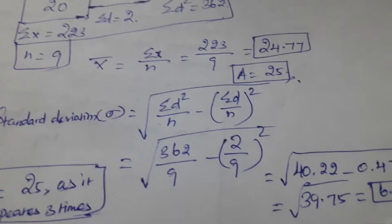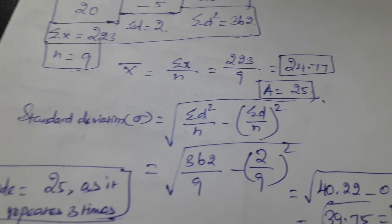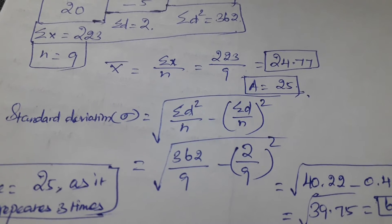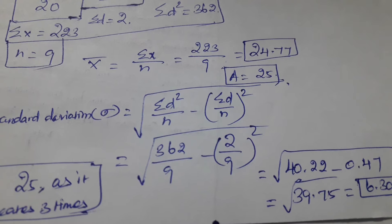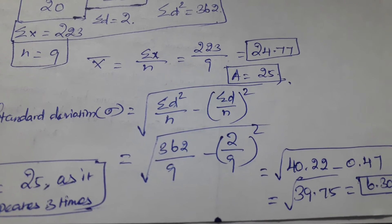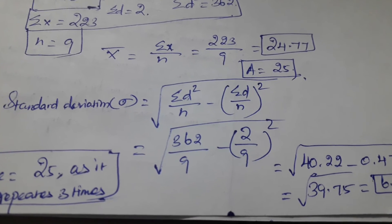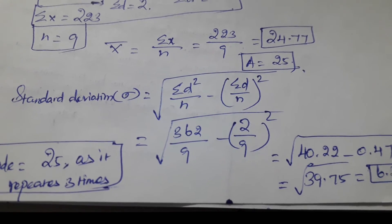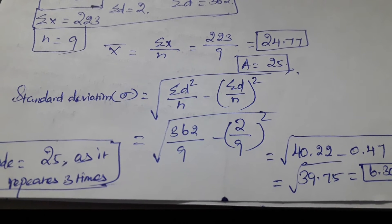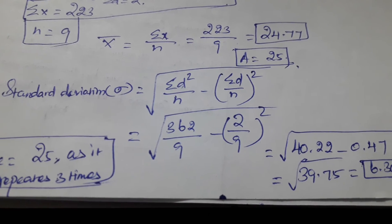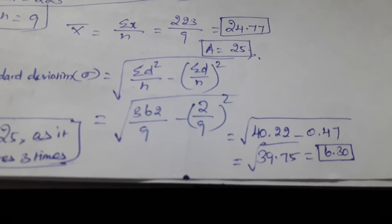Now we need to find the standard deviation. Since the mean value is a fraction, the standard deviation formula will differ. The formula is: square root of (summation t squared divided by n) minus (summation t divided by n) whole squared. Using the values already found, we get the standard deviation as 6.30.